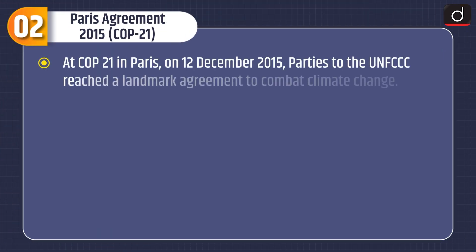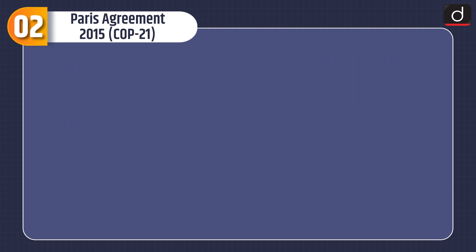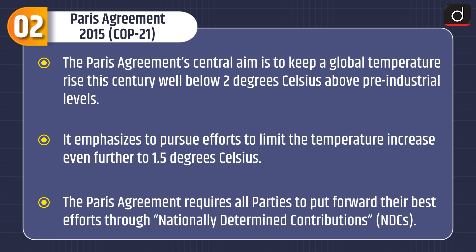Now let's discuss the Paris Agreement 2015 COP21. At COP21 in Paris, on 12 December 2015, parties to the UNFCCC reached a landmark agreement to combat climate change and to accelerate and intensify the actions and investments needed for a sustainable low-carbon future. The Paris Agreement builds upon the Convention and for the first time brings all nations into a common cause to undertake ambitious efforts. Its central aim is to keep the global temperature rise this century well below 2 degrees Celsius above pre-industrial levels.